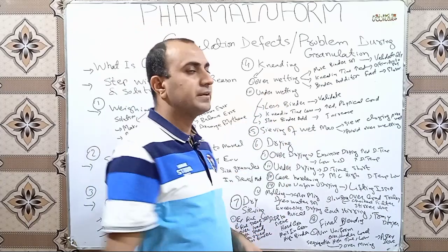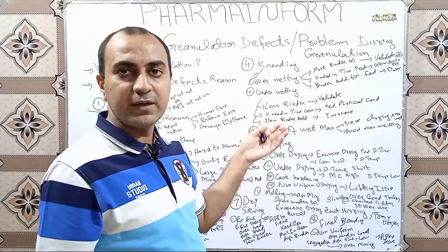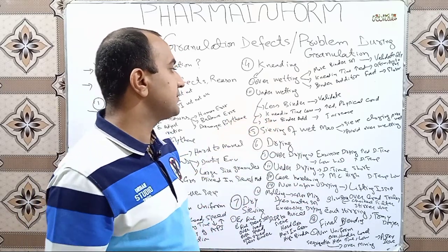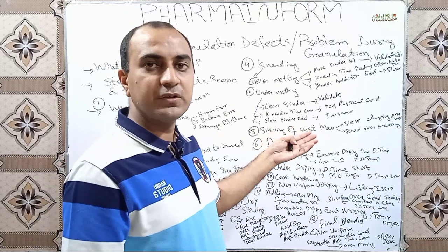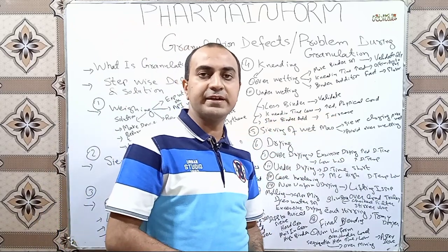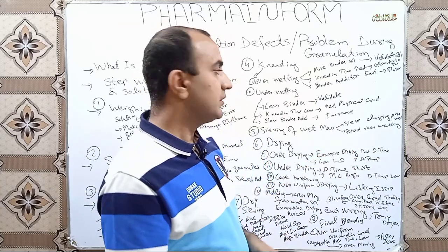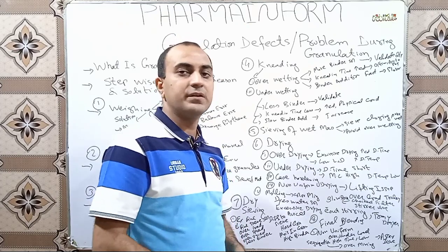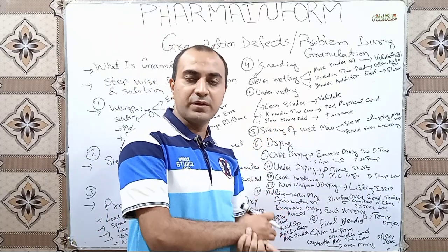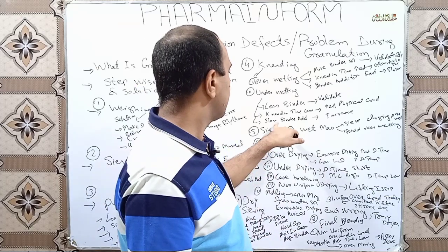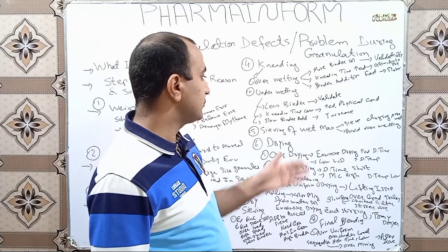Under-wetting is basically opposite to over-wetting. In under-wetting, the binder solution may be too little, kneading time may be too low, or binder addition rate may be too slow. Solutions: validate your binder solution quantity or volume, increase kneading time, physically check the granules and adjust kneading time according to the physical observation. If binder solution is added too slowly, increase the rate of binder addition.